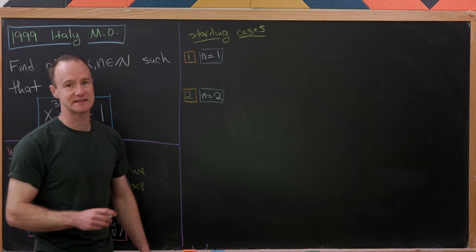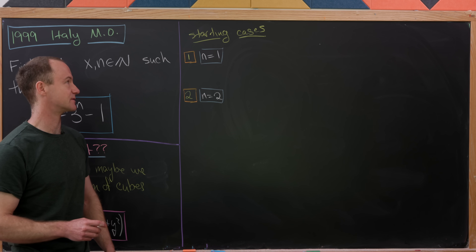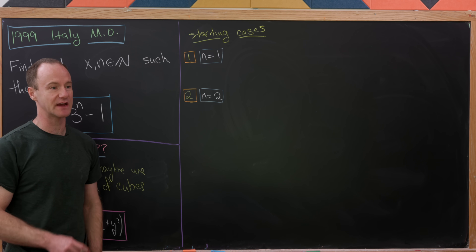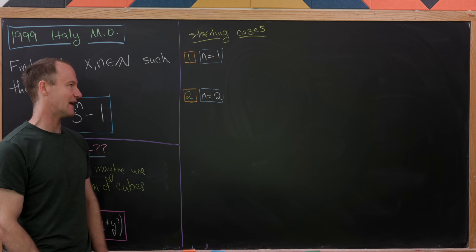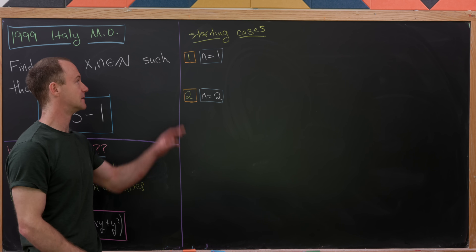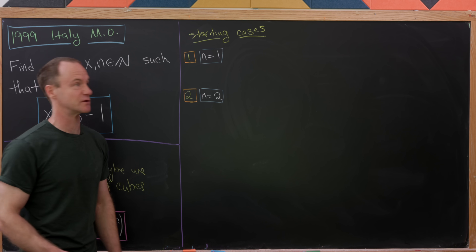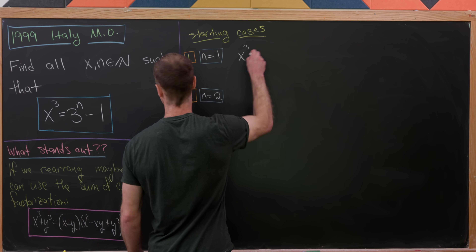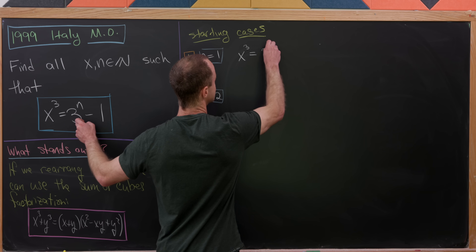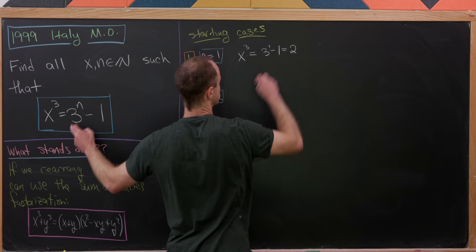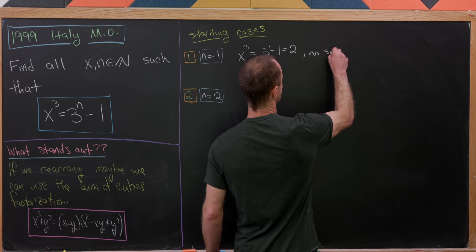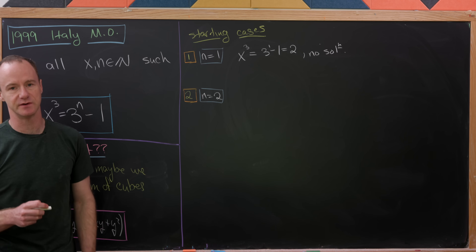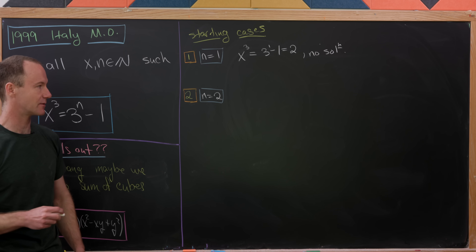Before we get to that, we probably want to look at some small cases, because problems like this generally only have one or two solutions, and they happen for very small values of n. Starting with n = 1: x³ = 3¹ - 1 = 2. There's clearly no solution here, because the cube root of 2 is not a rational number, let alone a natural number.